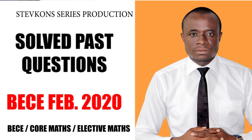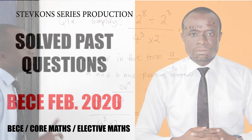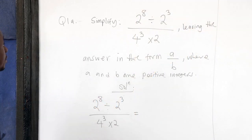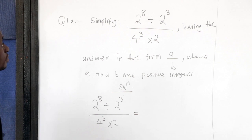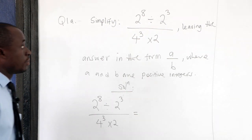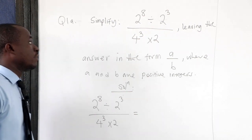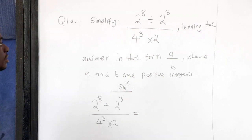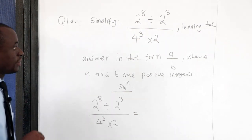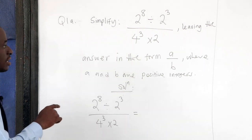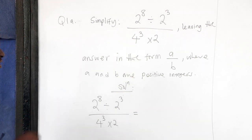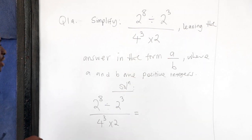This is the February 2020 private paper. Question 1a: simplify 2 to the power 8 divided by 2 to the power 3, all over 4 to the power 3 times 2, leaving the answer in the form a over b — the rational form where a and b are positive integers.